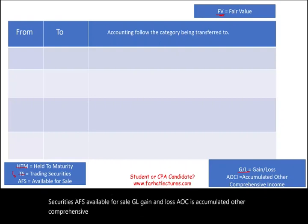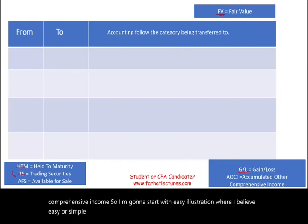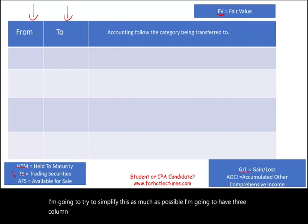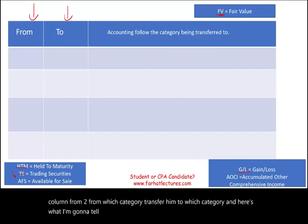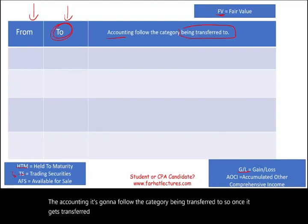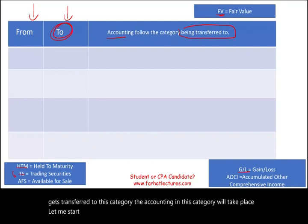I'm going to start with a simple illustration. I'm going to have three columns: from which category, transferring to which category, and here's what I'm going to tell you. The accounting is going to follow the category being transferred to. So once it gets transferred to a new category, the accounting for that category will take place.